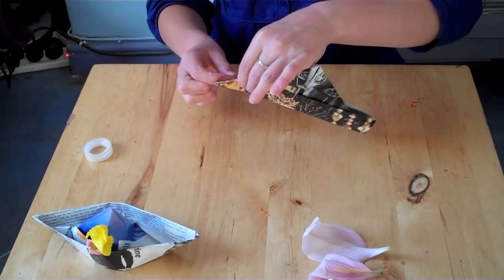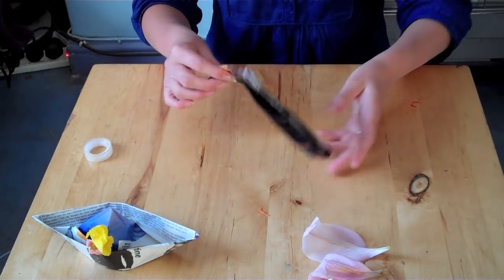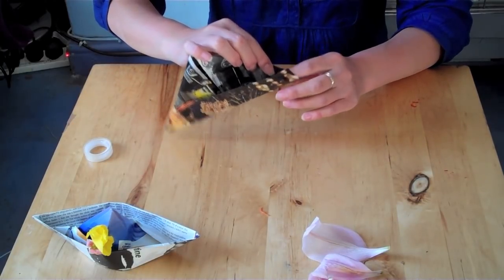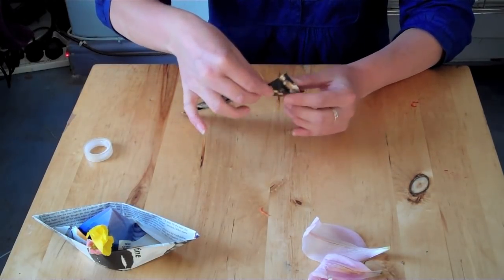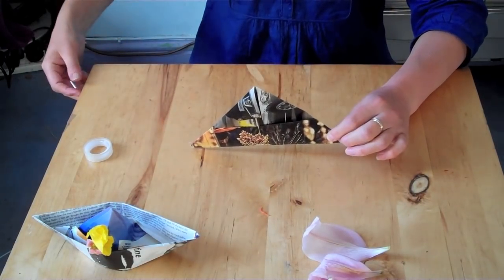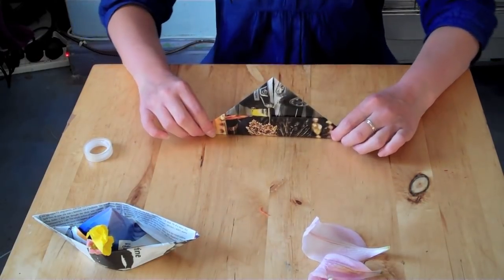I think if you do proper origami that's a very bad thing to do but I'm going to do it anyway. So you fold that over there. If you can see, there we have a triangle.